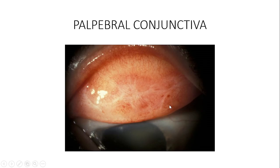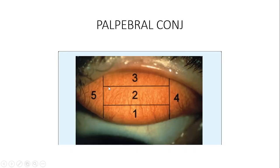The marginal conjunctiva is found at the margin of the eyelid on the inner side — about two millimeters from the mucocutaneous junction. The tarsal conjunctiva is found at the inner portion of the tarsal plate, which contains the meibomian glands. The orbital conjunctiva is found deeper, posterior to the tarsal conjunctiva.